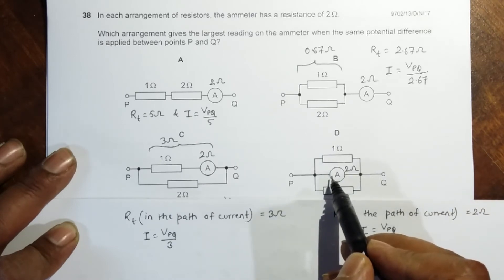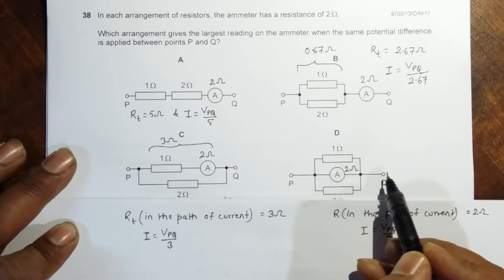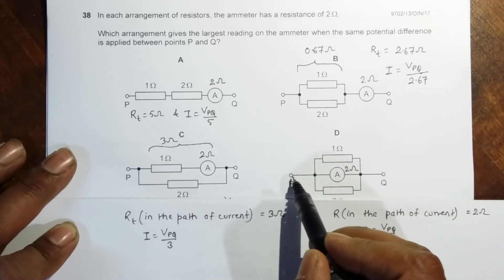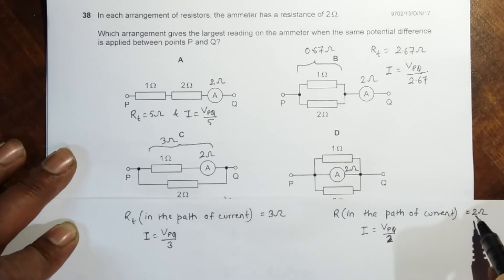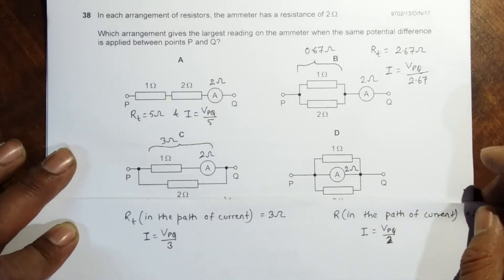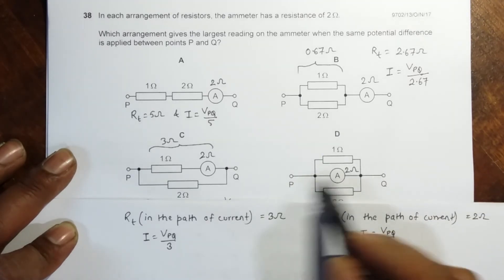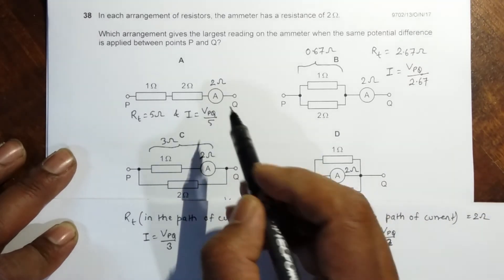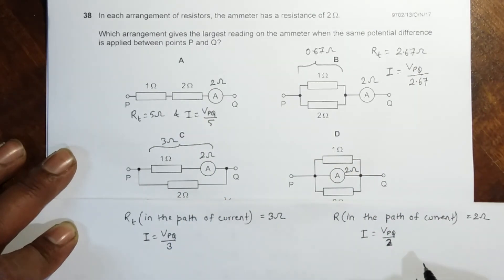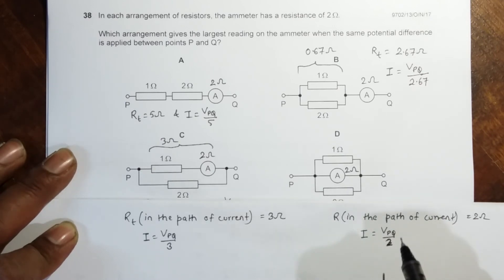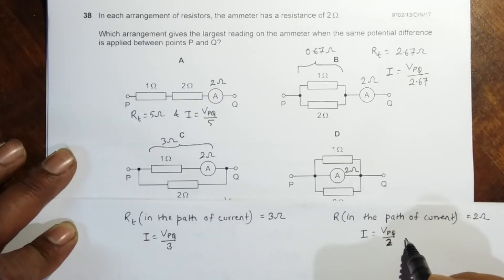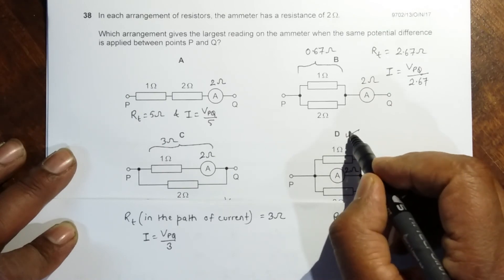In case D, the ammeter directly connects to P and Q, so the resistance along that current path is 2 ohms only. It doesn't involve the other 2 ohm or the 1 ohm resistors, so the current is simply I = VPQ divided by 2. Comparing all cases, the smallest denominator is in case D, meaning the current is highest there. Therefore, case D is the correct answer.